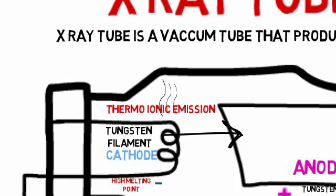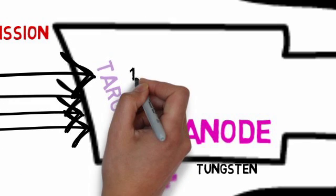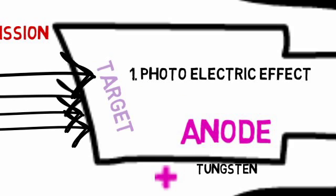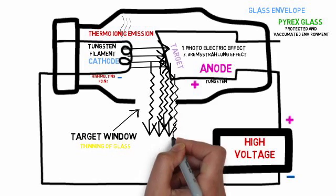The produced electrons travel from cathode towards the anode and hit the anode, hence it is also called as target. Once they are hit, two effects come into place: the photoelectric effect and Bremsstrahlung effect. Thus X-rays are produced.